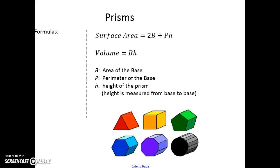If you think about a prism, here are a few pictures of prisms. These are 3D shapes where each base is the same. On this one, the triangle would be the base, and there's a congruent triangle on the other side. So there are two congruent bases connected with rectangles. We're going to talk about right prisms.